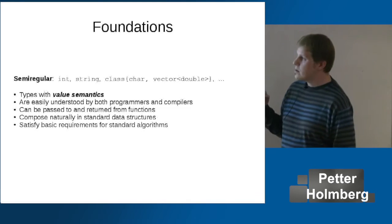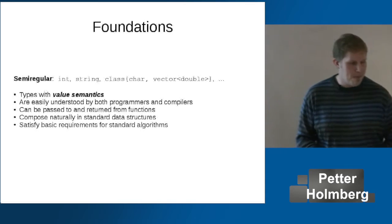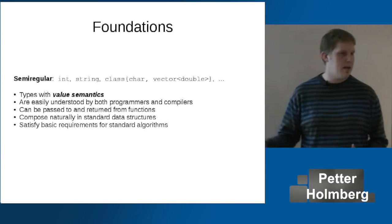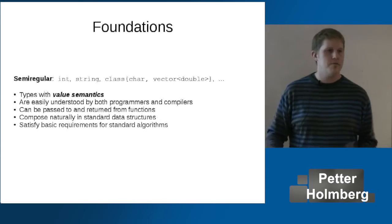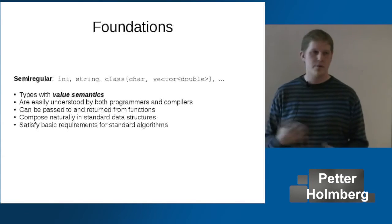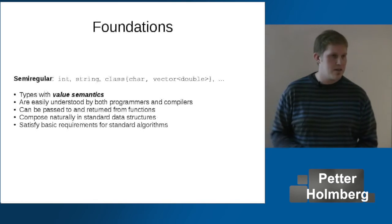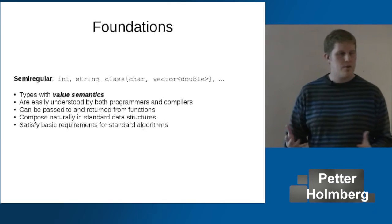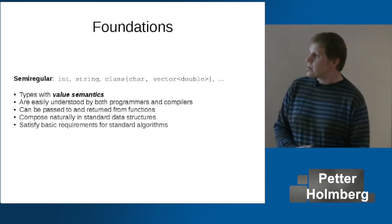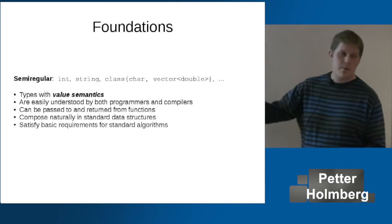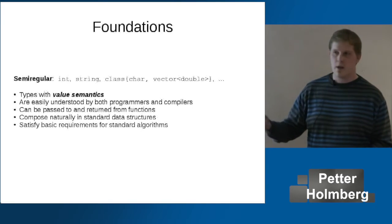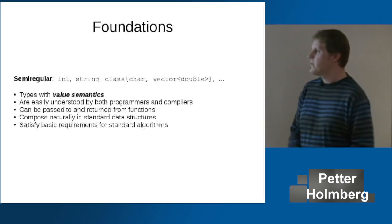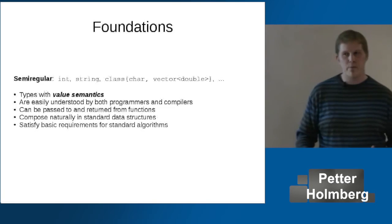That concept is called semi-regular. Even if you're not familiar with that name, you're all familiar with semi-regular types. Usually we talk about types having value semantics — basically self-contained types that you can copy. That includes all the simple built-in types, many of the library types, as well as classes composed out of semi-regular types. And they have many nice properties.